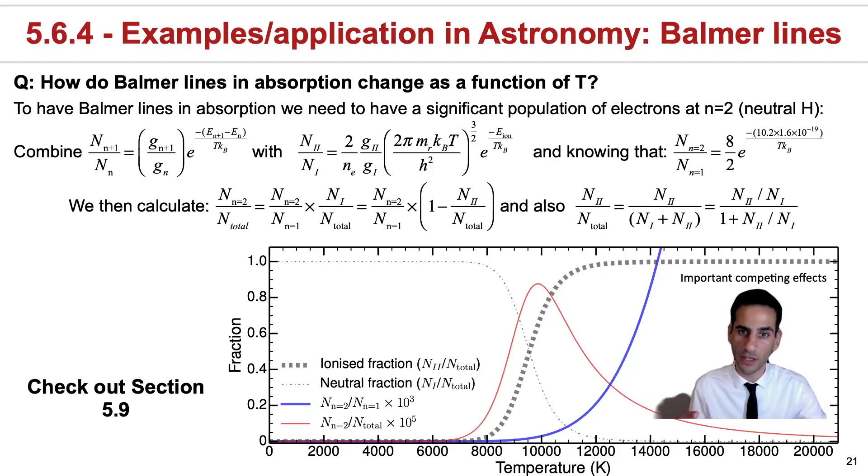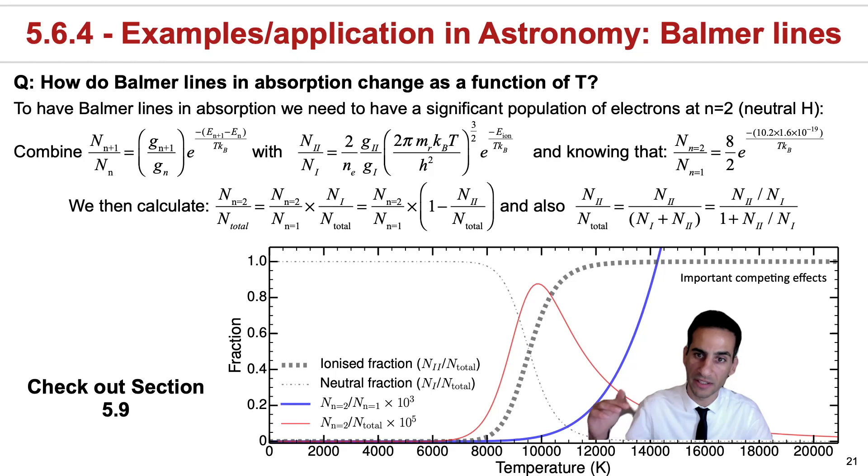You can take the equations and start plugging in temperatures, essentially from the lowest around here to some of the highest temperatures going along this direction. If we just use the Boltzmann equation, then the prediction would actually be this blue line. The Boltzmann equation will tell us that the higher the temperature, the higher the ratio of atoms at n equals 2 versus n equals 1.